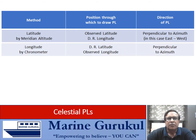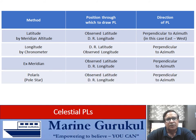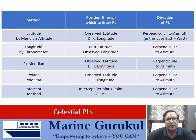Summary of celestial PL methods — position through which to draw the PL and direction (always perpendicular to azimuth): Longitude by chronometer: DR lat, observed long. Ex-meridian method: observed lat, DR long. Polaris (pole star): observed lat, DR long. Intercept method: the PL is drawn through the intercept terminus point (ITP), with direction perpendicular to azimuth. We will understand these through worked examples.